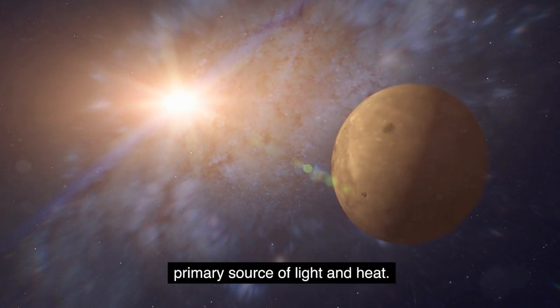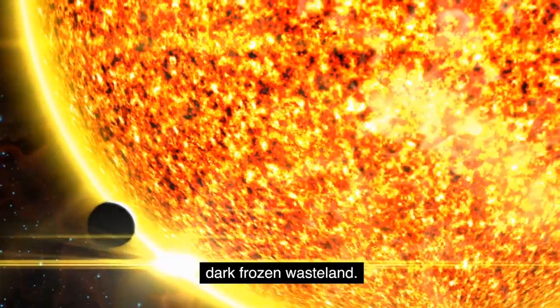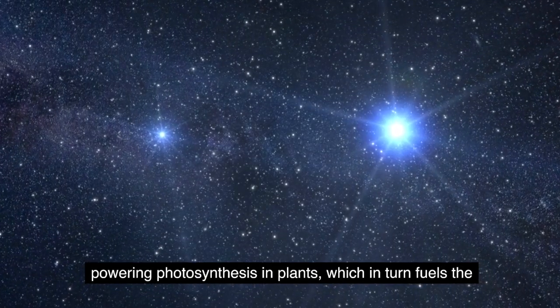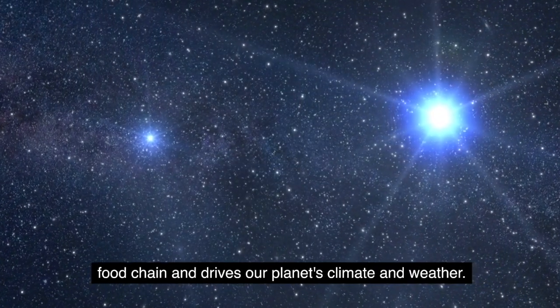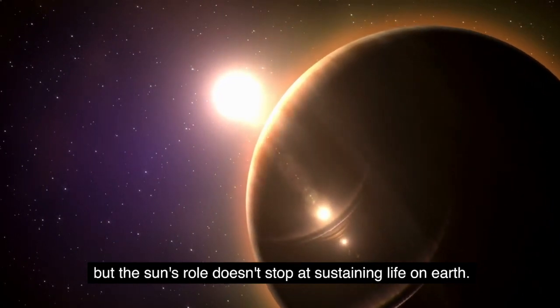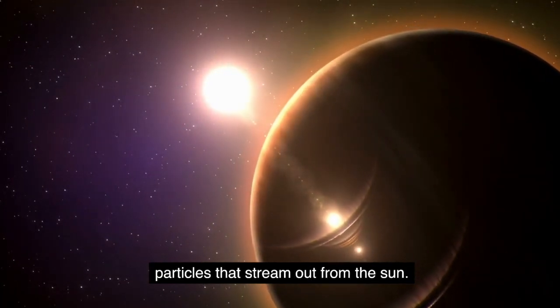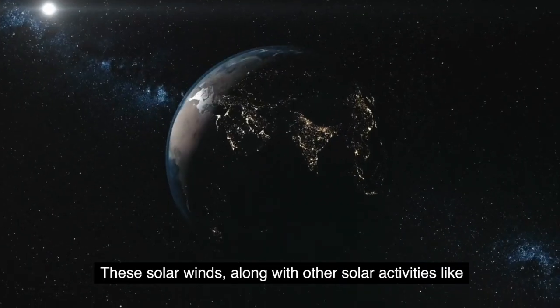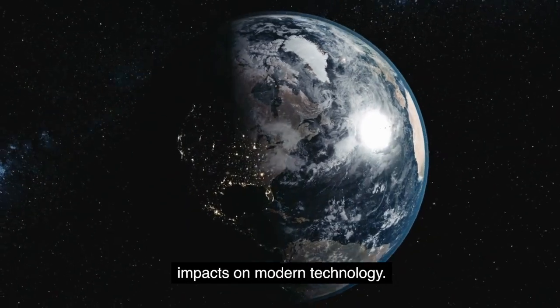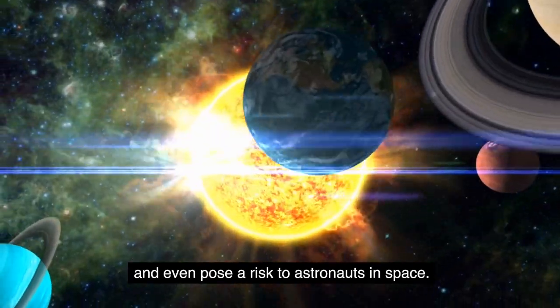It's also our primary source of light and heat. Without the sun's radiant energy, our planet would be a dark, frozen wasteland. It's the sun's heat and light that make life possible on earth, powering photosynthesis in plants, which in turn fuels the food chain and drives our planet's climate and weather. But the sun's role doesn't stop at sustaining life on earth. It's also a driver of space weather, the flow of charged particles that stream out from the sun. These solar winds along with other solar activities like flares and coronal mass ejections, can have significant impacts on modern technology. They can disrupt satellite communications, power grids and even pose a risk to astronauts in space.